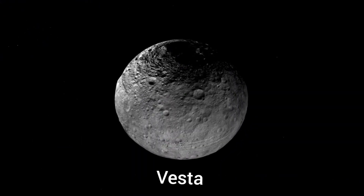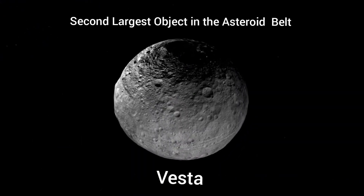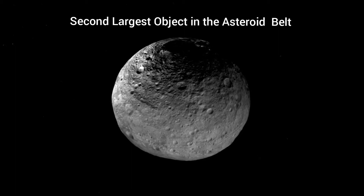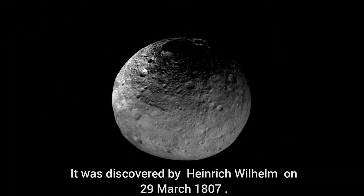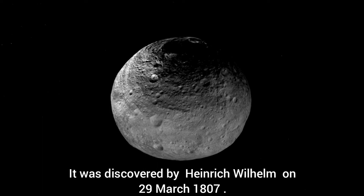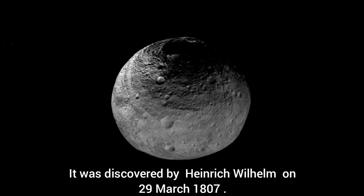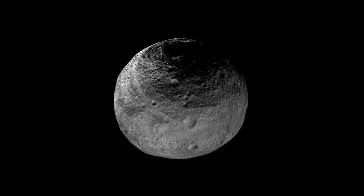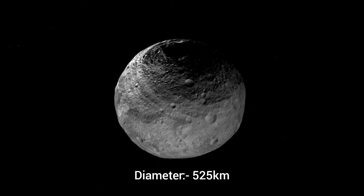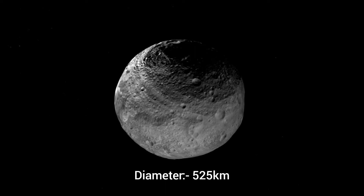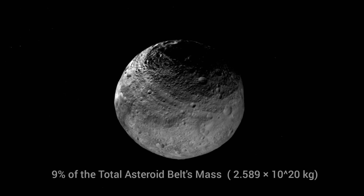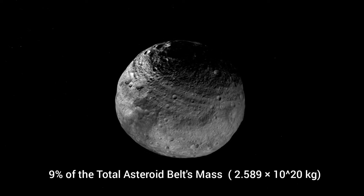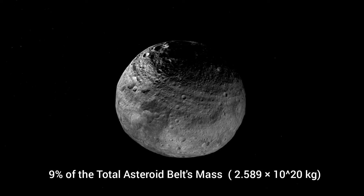Vesta is the second largest object in the asteroid belt. It was discovered by Heinrich Wilhelm on the 29th of March 1807. With a diameter of 525 kilometers, Vesta comprises 9% of the total asteroid belt's mass.